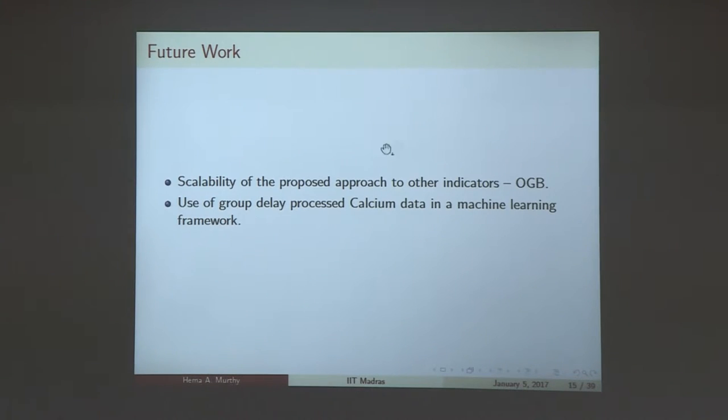This was the first task that we looked at. Next thing is scalability of the proposed approach to other indicators. There's something called OGB. We have got some data for this, and we are trying to figure out how to do this. We're also saying that group delay, since it enhances the peaks, can we put it in a machine learning framework like the STM and see if we can get better spike rates.